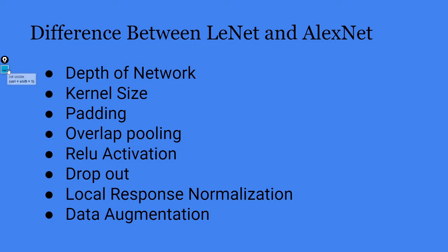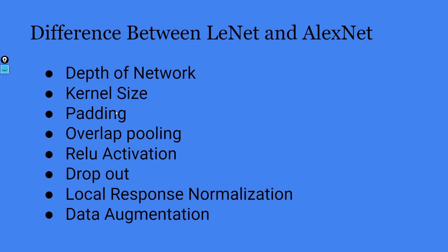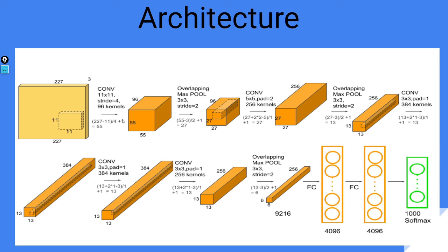The kernel size is also very different compared to LeNet, where 5x5 was used in every layer. In AlexNet, there are different kernel sizes: 11x11, 3x3, and various other sizes have been implemented. A new concept — padding — has also been introduced. While describing the architecture, I'll explain what padding is and how it works.